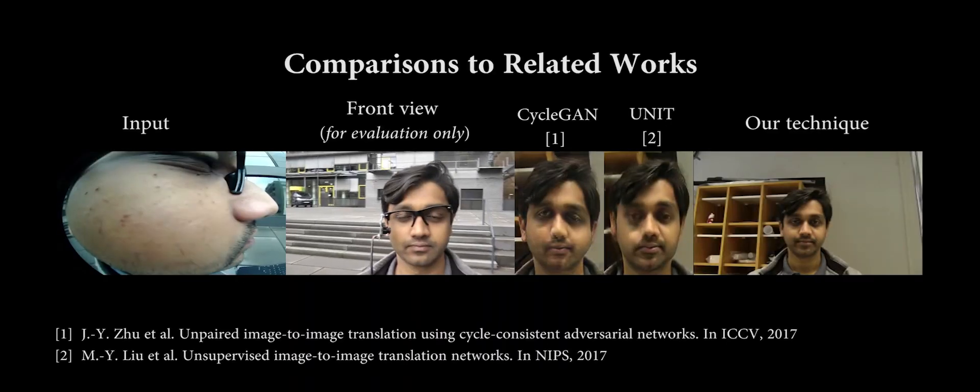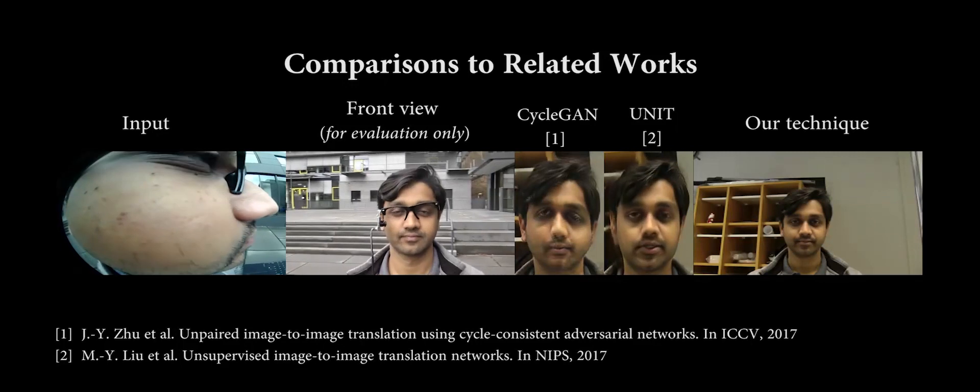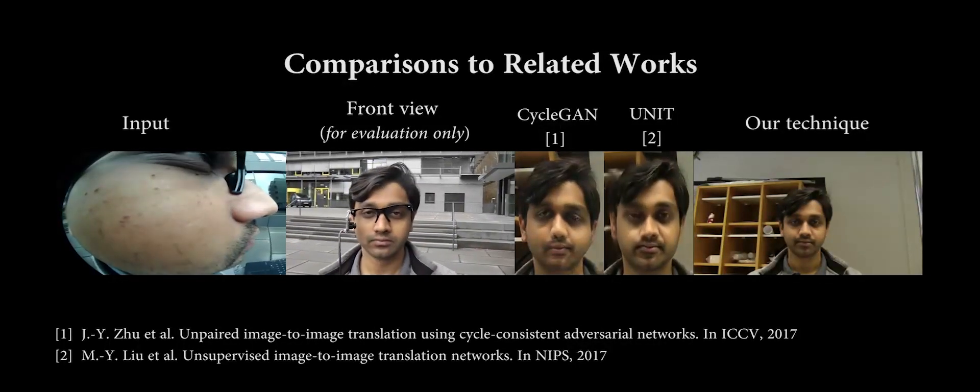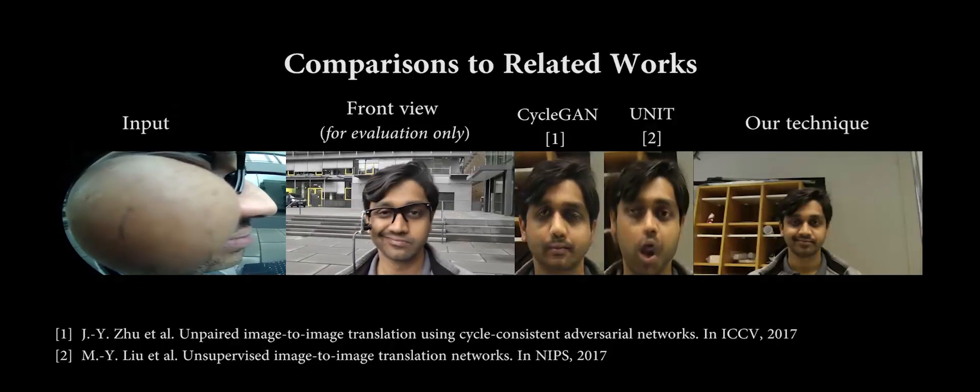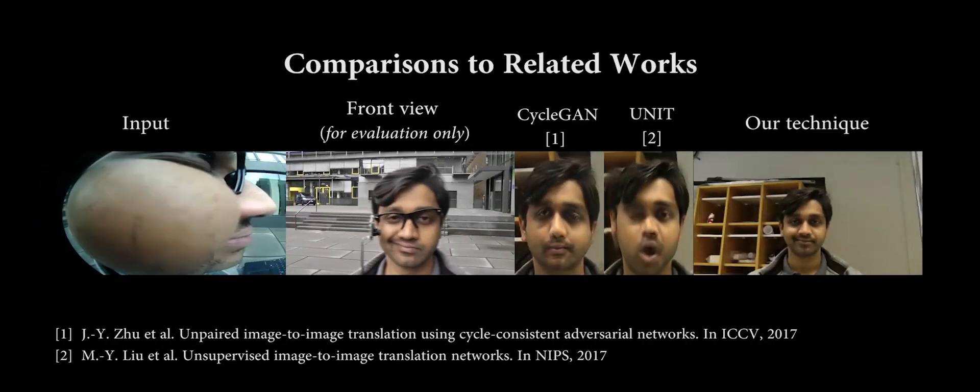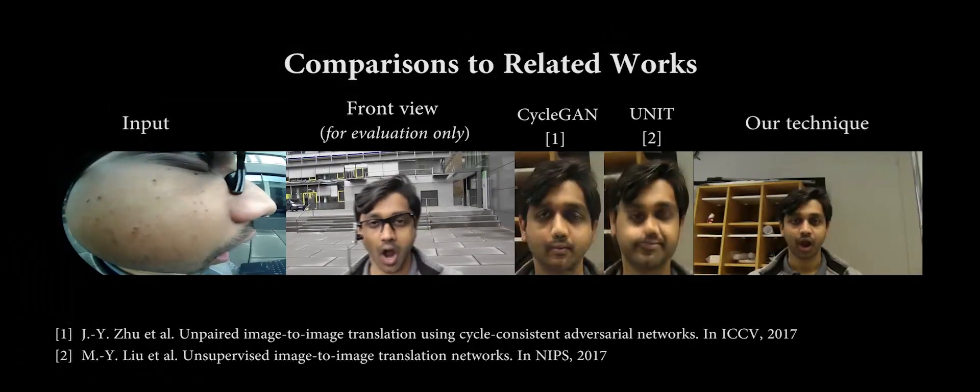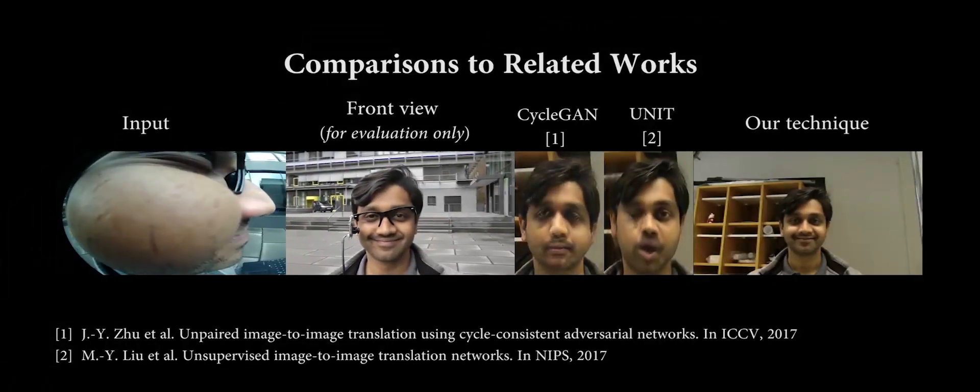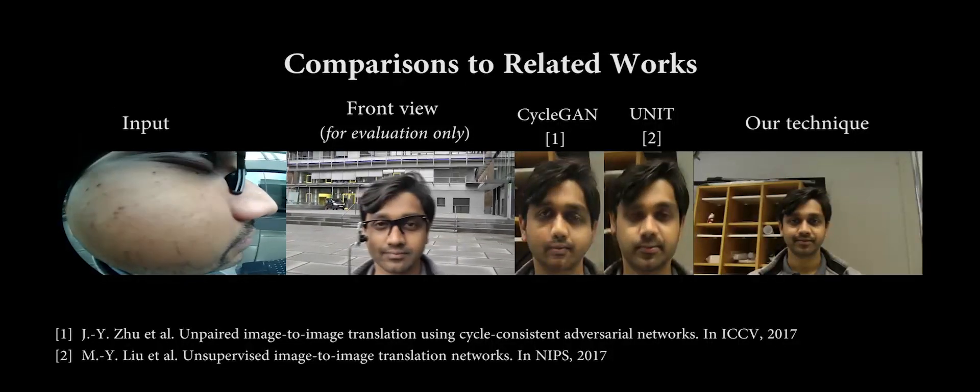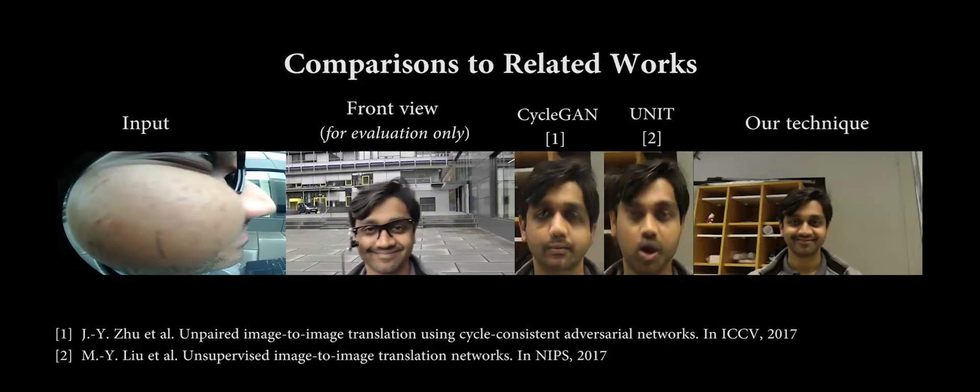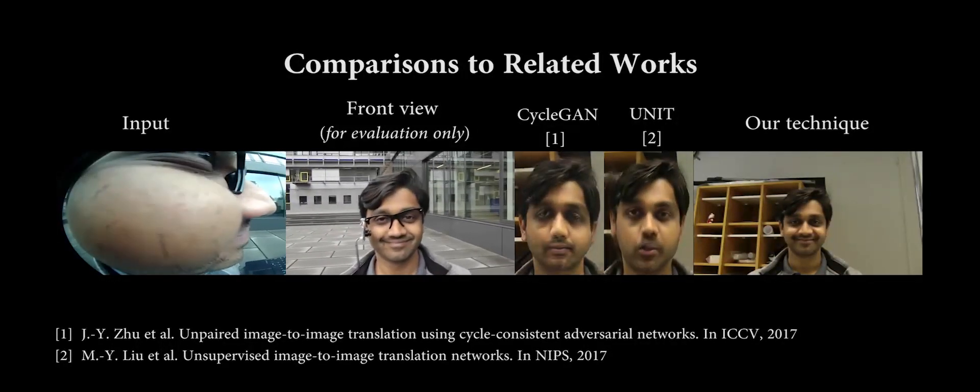Since EcoFace performs unpaired image translation, we compare against CycleGAN and UNET. We train both techniques on our datasets. To improve their performance, we reduce the impact of the background by taking a tight crop around the face. Both CycleGAN and UNET deform the face in a very unnatural manner. EcoFace, however, retargets the face in a new environment while maintaining its integrity.